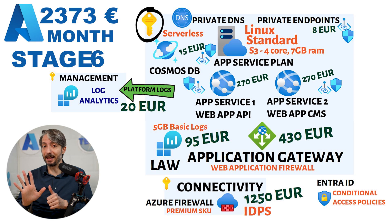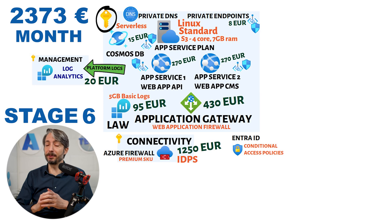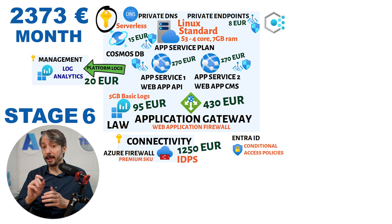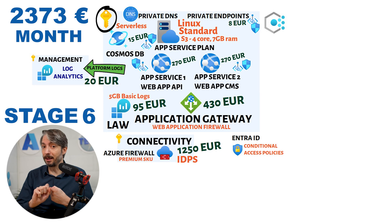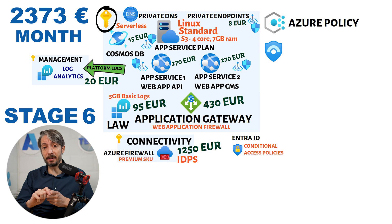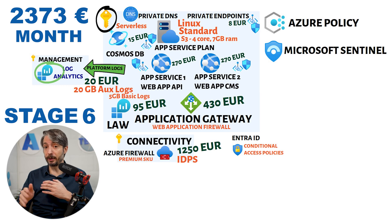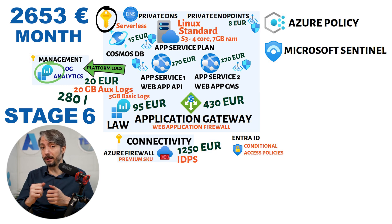We're not done yet — we're looking at stage 6, which is the final one for this video. There's much more to setting up a security landing zone than what I've gone through up till now. There are some additional controls to take into consideration. Governance: do not forget about governance. Use Azure policies as guardrails to define what can and cannot be done in the landing zone. Microsoft Sentinel for logging — it's good to have a SIEM system in place. We upgrade our log analytics workspace to include 5 GB of basic logs and 20 GB of auxiliary logs used for the Azure firewall, adding around 280 euros per month.